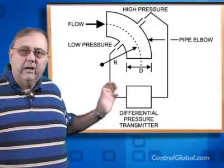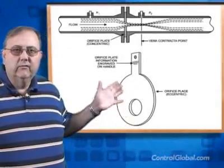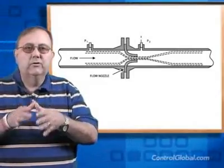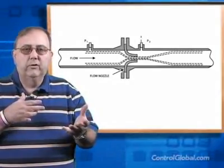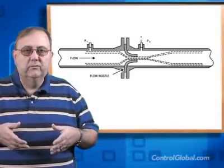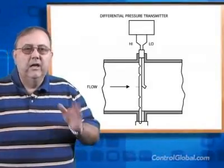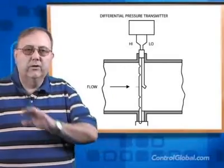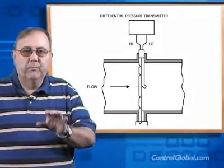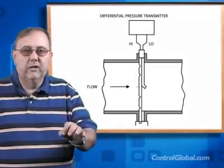There are many kinds of primary elements: orifice plates, venturi tubes, elbows, flow nozzles, low-loss flow tubes, single port and multiple port pitot tubes, segmental wedge and v-cone elements. Each of these elements is designed so that the volumetric flow rate is proportional to the square root of the pressure drop across the element.